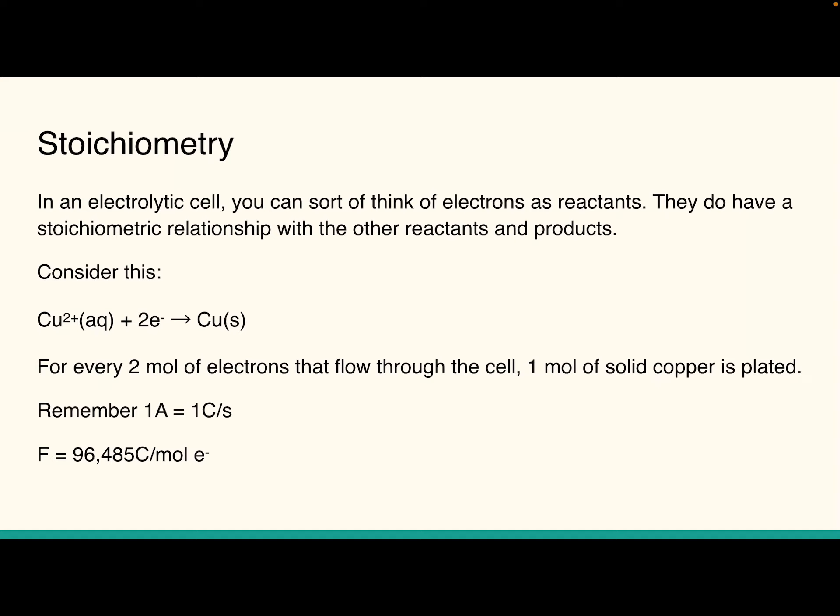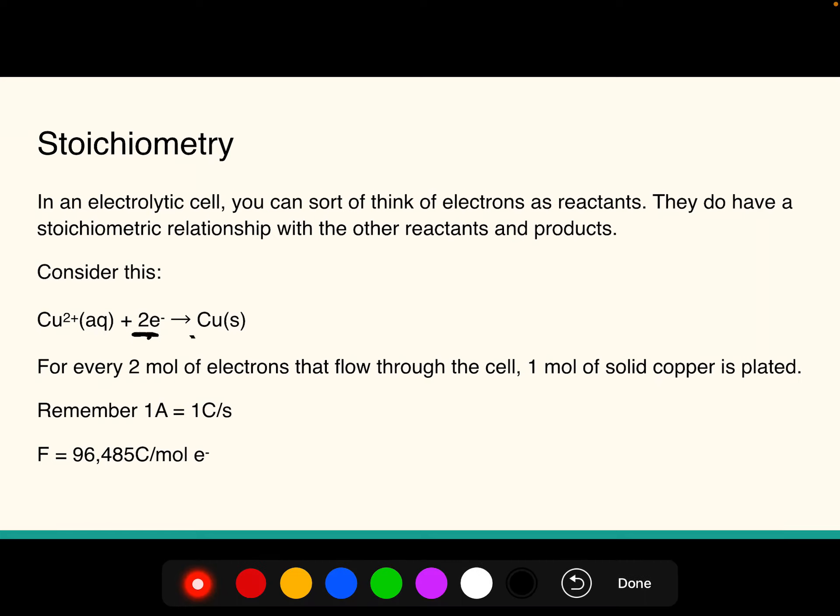But we also know that there's 96,485 coulombs per one mole of electrons. So if we have our balanced equation that shows us here that with two moles of electrons, we can get one mole of solid copper, we can actually, since this is a unit of time, figure out how much time it takes to plate out a certain number of grams of a metal. And it's pretty nifty.